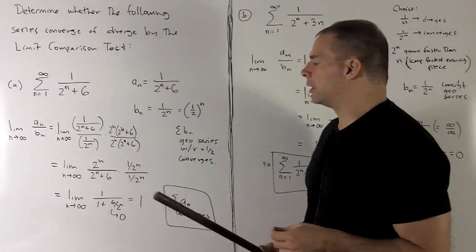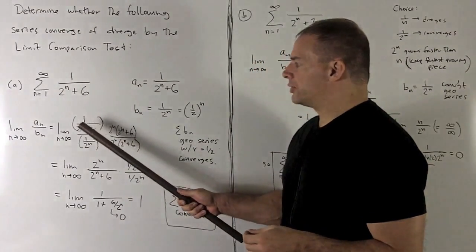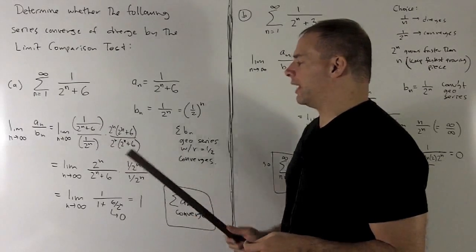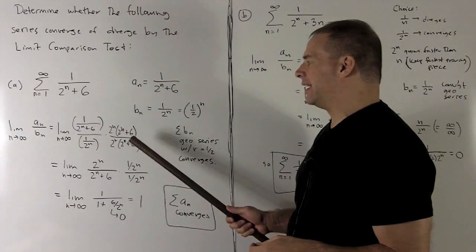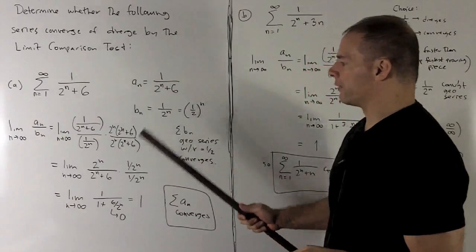So let's do our limit. I'm going to have 1 over 2 to the n plus 6 over 1 over 2 to the n. We're going to clean out the denominators by multiplying by 2 to the n times 2 to the n plus 6 over itself.